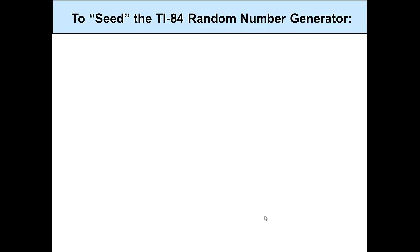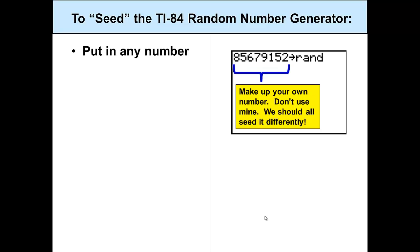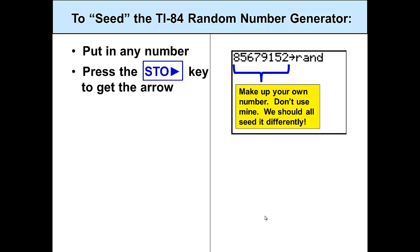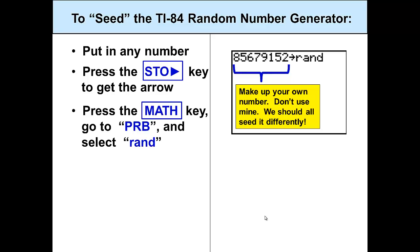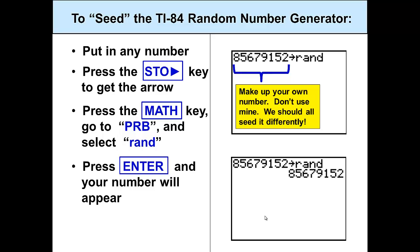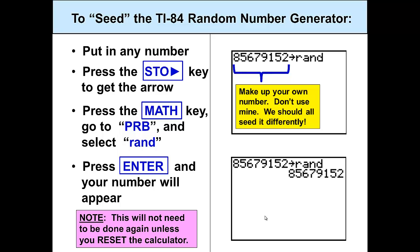Here are the steps to seed the random number generator. Put in any number — make up your own number, don't use the one on the screen. We should all seed our calculators differently. Then press the store key to get the arrow. Press the math key, go over to PRB which stands for probability, and select RAND which stands for random. Press enter and your number will reappear. We have seeded the calculator and only need to do this one time. Unless we hit the reset button, we will not need to do this again.